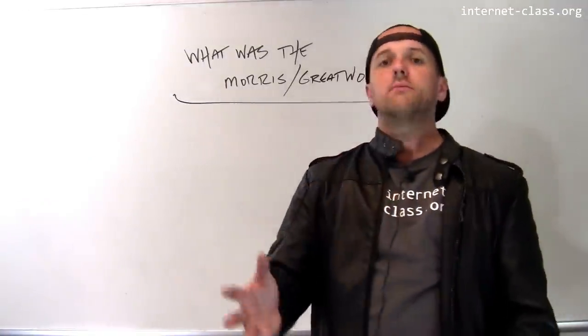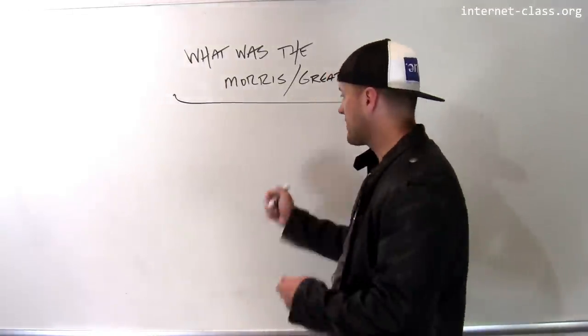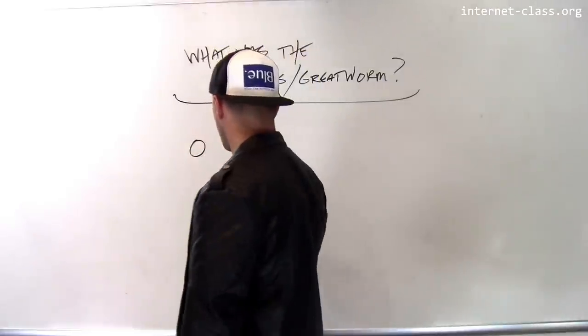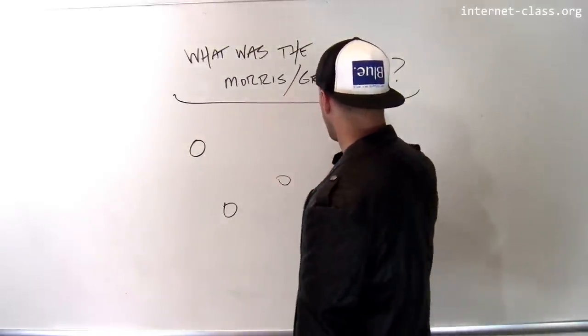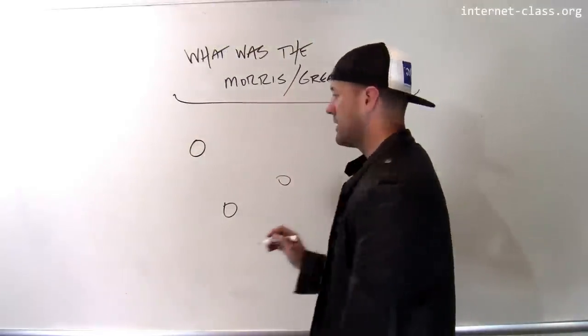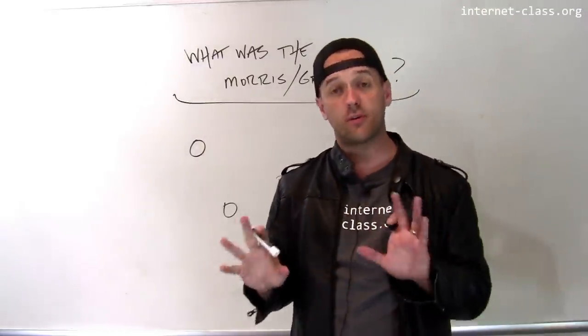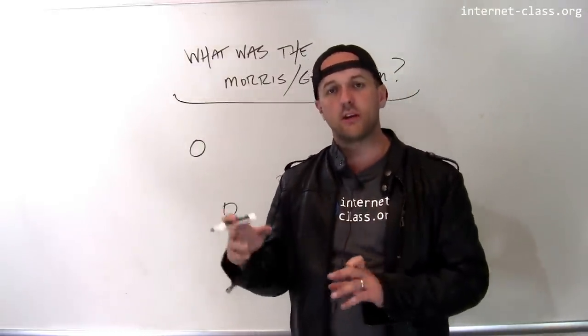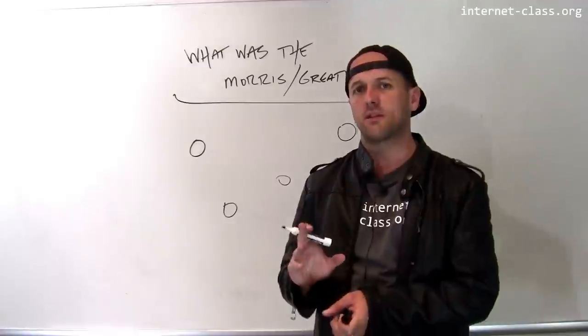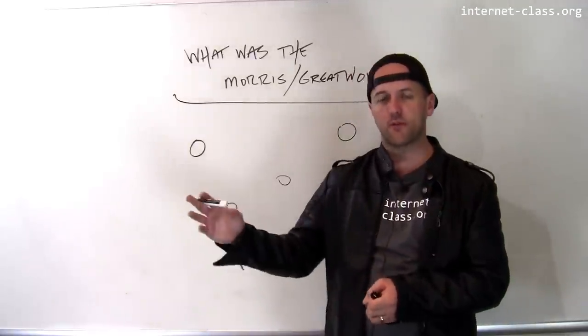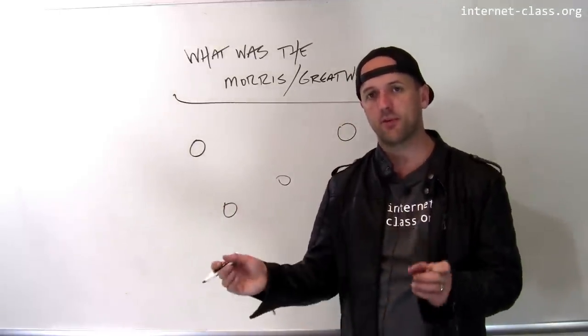And the way that Morris proposed to do this was to use something called a computer worm. Let me explain how a computer worm works. A computer worm tries to infect other computers on a computer network. It exploits some vulnerability in the software that they were using. And there were several vulnerabilities that Morris identified and exploited.